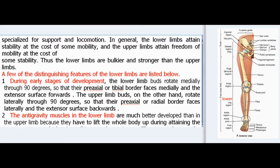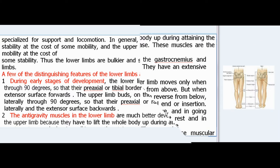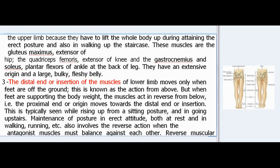A few distinguishing features of the lower limbs are listed below. First, during early stages of development, the lower limb buds rotate medially through 90 degrees so that their pre-axial or tibial border faces medially and the extensor surface faces forwards. The upper limb buds rotate laterally through 90 degrees so that their pre-axial or radial border faces laterally and the extensor surface faces backwards. Second, the anti-gravity muscles in the lower limb are much better developed than in the upper limb because they have to lift the whole body up during attaining the erect posture and also in walking up the staircase.